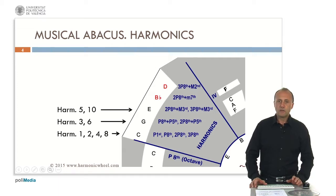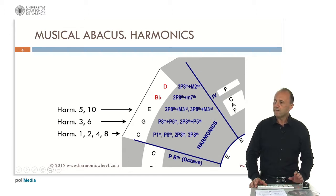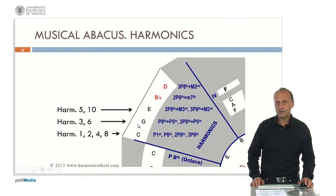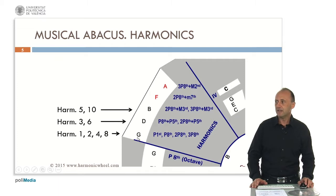If we want to find other notes showing great affinity with note C, we have to choose the most important note from C, which is its third harmonic, note G, and then we look for its first harmonics, which we can see here. They are, of course, note G, then D, and B.